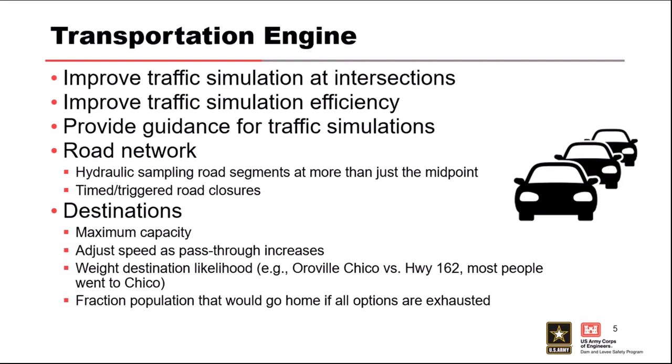We identified several potential issues with destinations in LifeSim. First, capacity: we don't have a maximum capacity at destinations, which makes it really hard to model internal destination points. Once that maximum capacity is exceeded, those trying to evacuate there need to find somewhere else to go. Also, adjusting speed as pass-through increases — vehicles don't just stop once they've reached the destination. That can be a real issue in places like L.A. where there's city beyond the destination, so we need a function that slows vehicles as destination density increases.